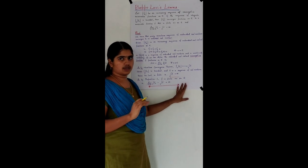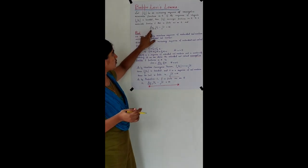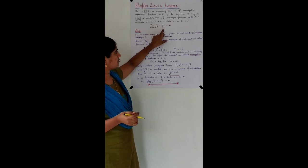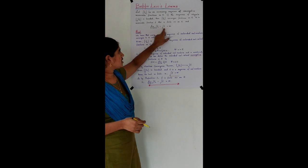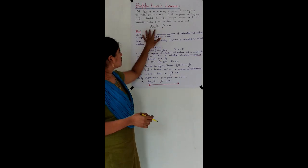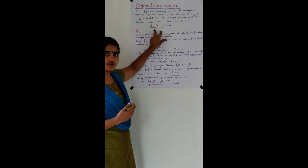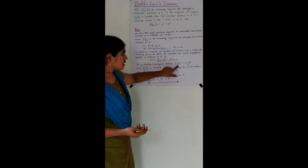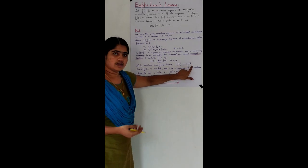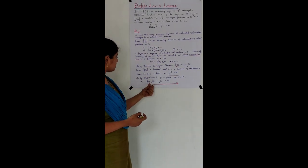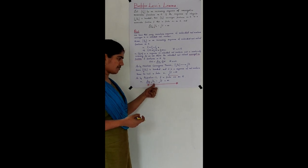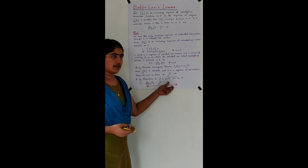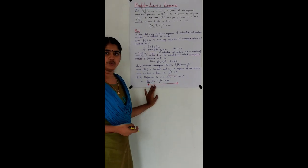Finally, we also need to prove that the limit as n tends to infinity of the integral over E of Fₙ equals the integral over E of F, and that this is finite. By the monotone convergence theorem, the sequence of integrals converges to the integral over E of F, and that is finite. Hence, Beppo Levi's lemma has been proved.